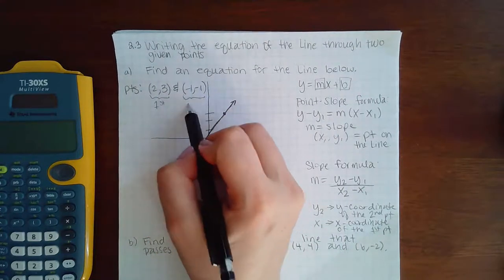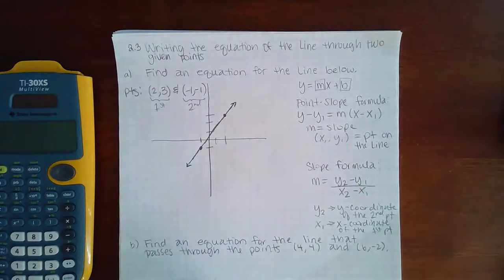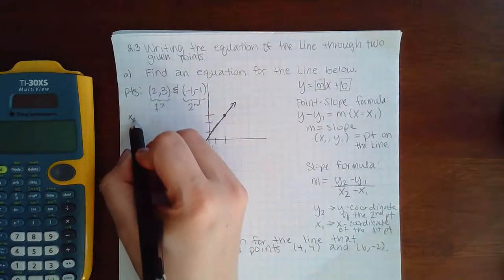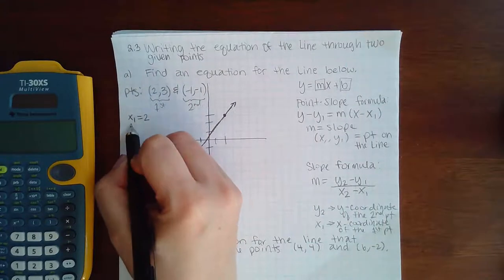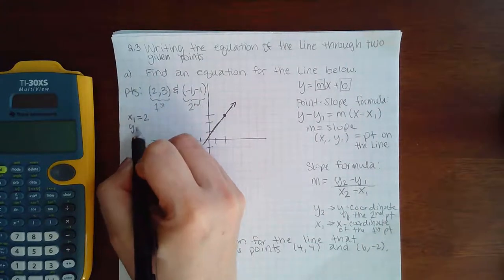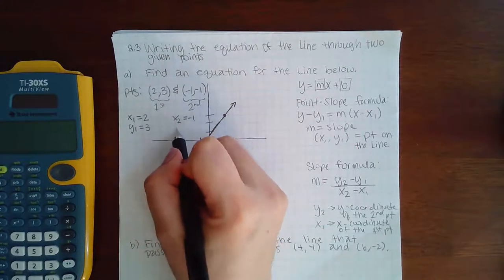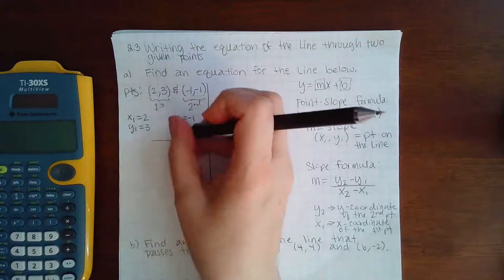I'm going to call this point my first point, and I'm going to call this point my second point. So then that makes x1 equal to 2, y1 equal to 3, x2 equal to negative 1, and y2 equal to negative 1.